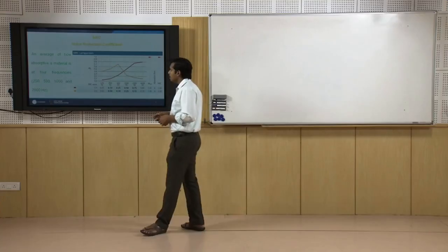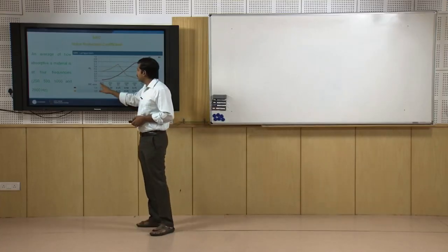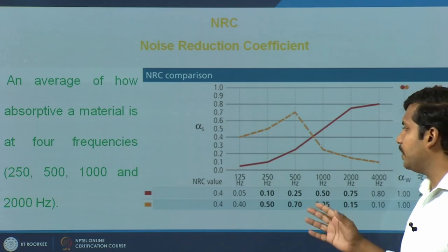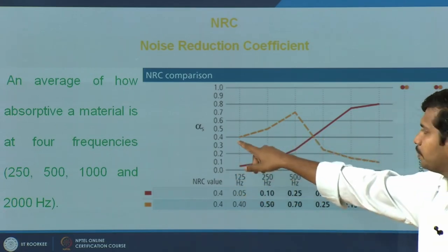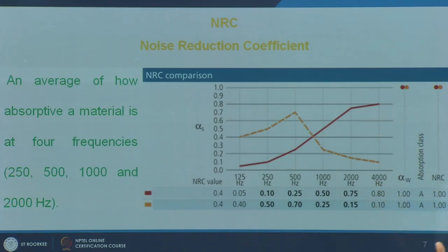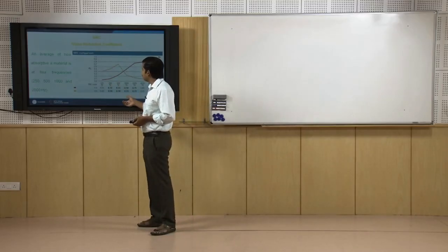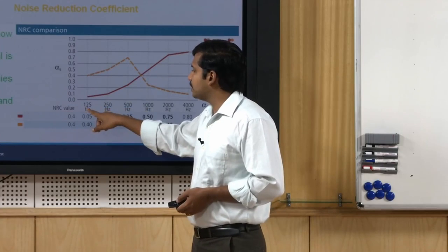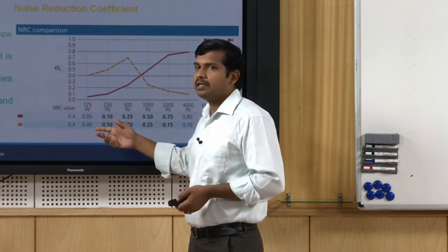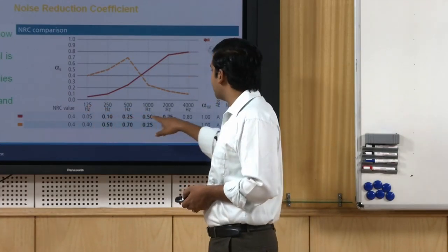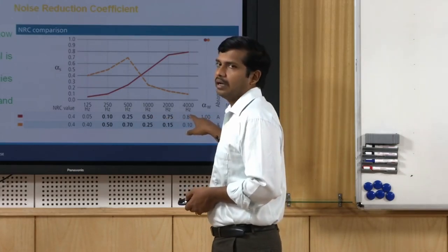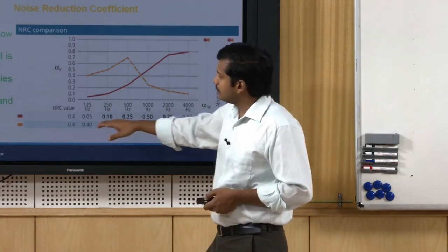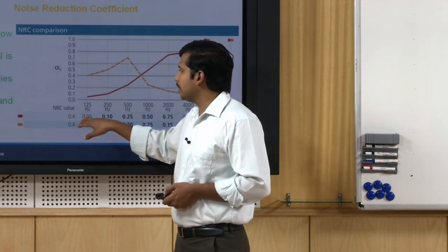Using these methods, you determine at specific frequencies what the absorption coefficient is — this is what we refer to as alpha. Take, for example, a material X — say a 50 mm cushion. At different frequencies starting from 125 Hz you get negligible absorption, and going up to 4000 Hz you get about 0.8 alpha. The material has good absorption in the high frequency range versus very negligible absorption in the low frequencies.